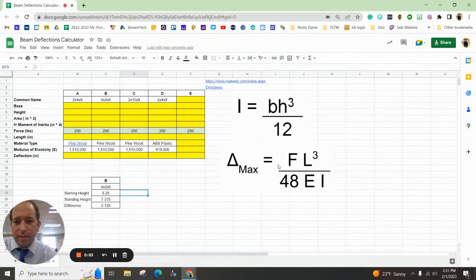Hey there, everybody. In this activity, you are going to use a Google spreadsheet to solve the deflection of different pieces of material. For example, we've got a 2x4, then we rotate it to a 4x2, 2x10, 2x4x8, and then also in column E, you can do whatever you want.